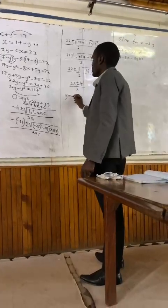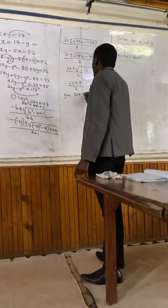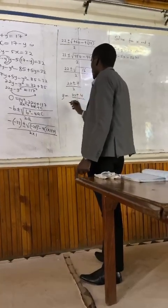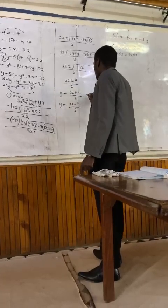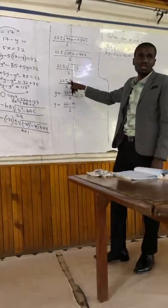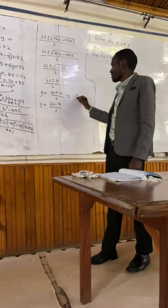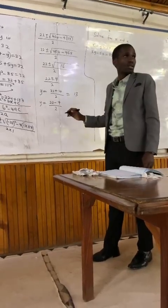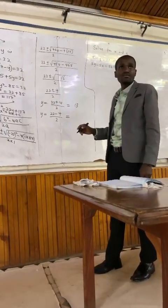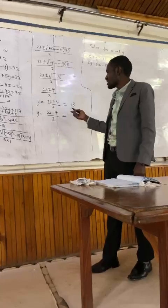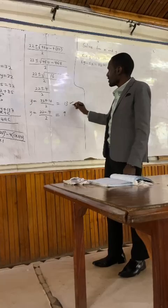So our first y will be 22 plus 4 over 2, and our second y will be 22 minus 4 over 2. We use plus and minus to get the two values of y. In the first case, 22 plus 4 is 26, divided by 2 is 13. In the second case, 22 minus 4 is 18, divided by 2 is 9. So we've gotten the two values of y: y equals 13 and y equals 9.